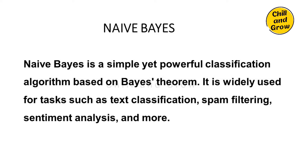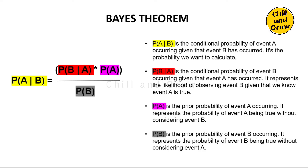Naive Bayes is based on Bayes Theorem, which is a probability theorem. Using the Bayes theorem, you can calculate the probability of an event given some evidence. The formula is: P of A given B equals P of B given A, multiplied by P of A, divided by P of B.